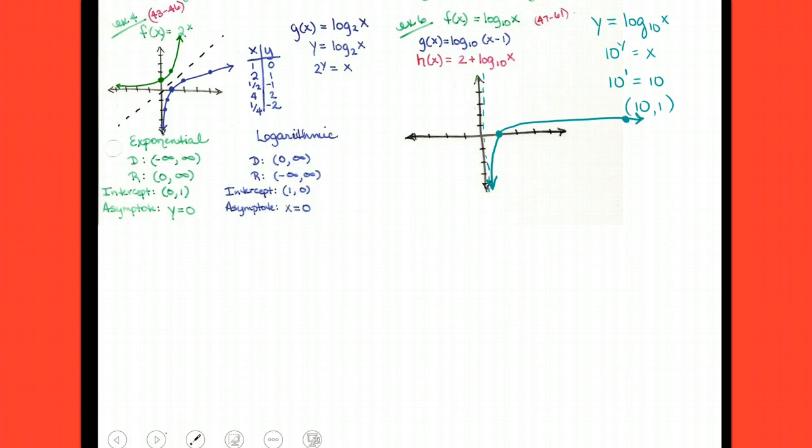So, there's the graph of my common log. Alright. So, now I want to do some shifting. If I compare my original f of x function with the g of x function that they gave me here, the only difference is that minus 1. Can that 1 be moved to the other side and grouped with the y? No. So, that means it's stuck to the x. So, it's going to cause a what?